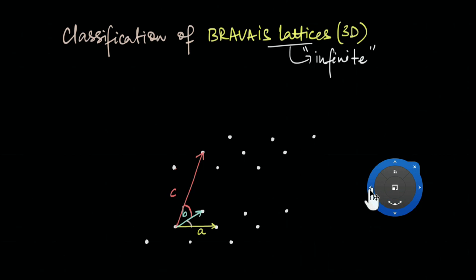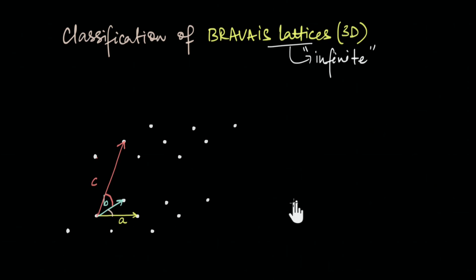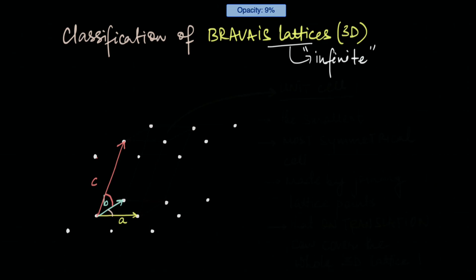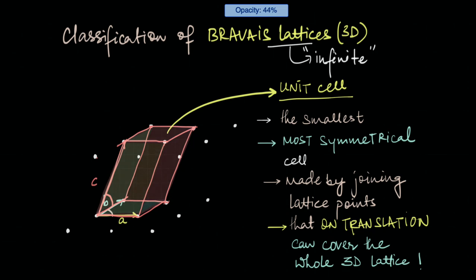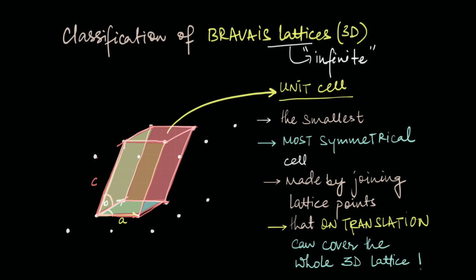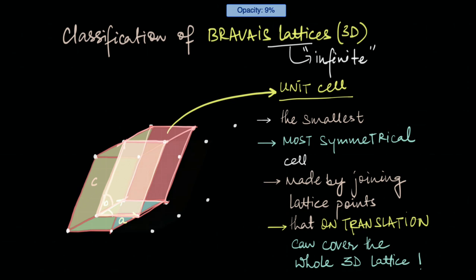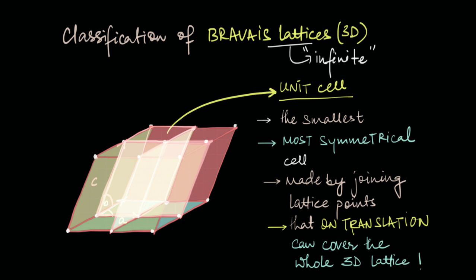Now that we have established that there can indeed be infinite different lattices, we can turn our focus to classifying them. From our previous videos we know that a lattice is defined by its symmetry, and the best way to figure out the overall symmetry of a lattice is by thinking about its unit cell. A unit cell in three dimensions is the smallest, most symmetrical cell made by joining the lattice points that on translation can fully cover the whole lattice. To figure out the different types of Bravais lattices in 3D, we need to think about the different kinds of unit cells possible in three dimensions.